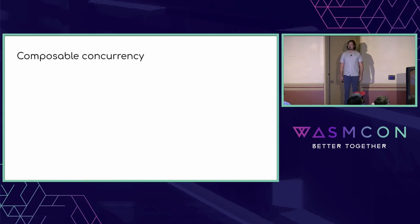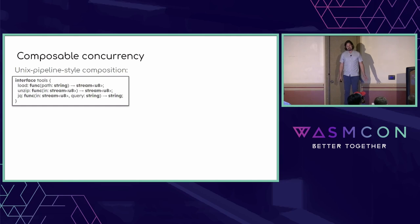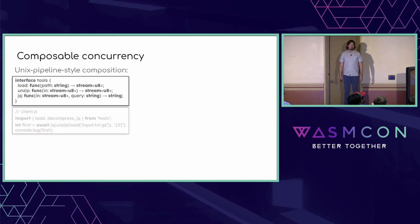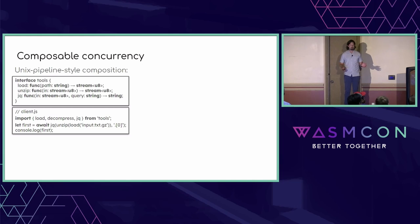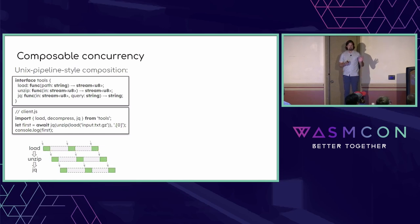Lastly in WASI 0.3, we want concurrent components to be more composable. There are two types of interesting compositionality. The first is a more first-order, Unix pipeline style where values flow in one direction. For example, say I have an interface with three functions: load, which returns a stream; unzip, which transforms a stream; and jq, which consumes a stream. In JavaScript, I can import these three functions and chain them together in one line using plain function composition — the return type of load is a readable stream and that's the parameter type of unzip. In that one line, I've wired together three async function calls so results flow into each other.